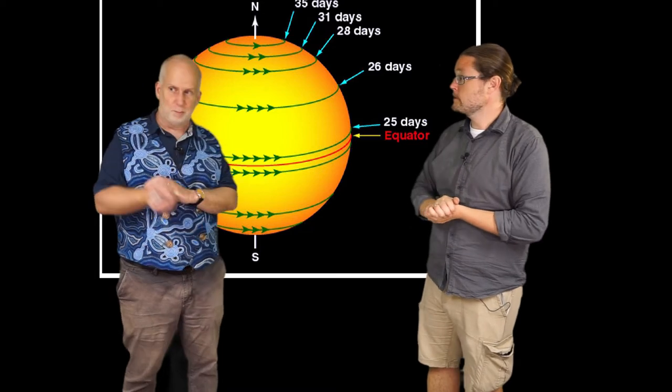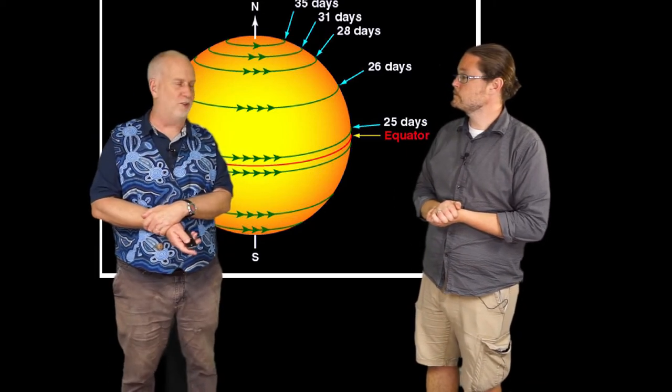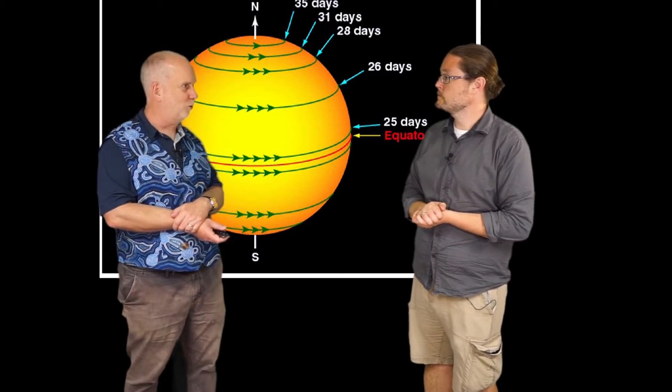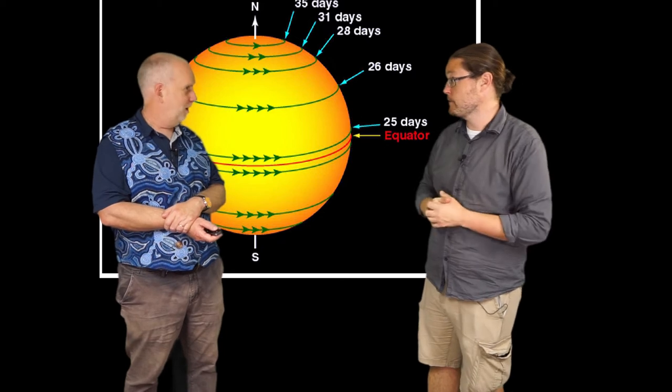That's right. And it doesn't, this has been known for hundreds of years, that in fact the equator of the Sun spins a little bit faster than the poles. And you can actually see how the sunspots move across the Sun and measure this, that's how they've known it for so long.